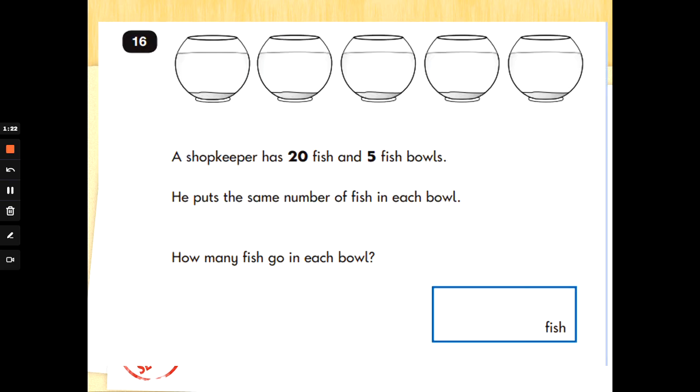Number 16. A shopkeeper has 20 fish and 5 fish bowls. And that's what they are pictures of. He puts the same number of fish in each bowl. How many fish go in each bowl? So he's got 20 fish and 5 bowls. And he's sharing them between the 5 bowls. So this is 20 divided by 5.